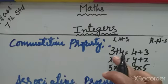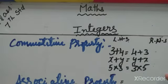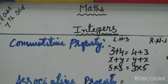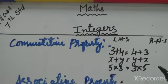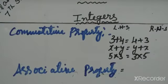3 plus 4 is 7, and if you reverse it, 4 plus 3 is also 7. Similarly, x plus y and y plus x are one and the same. 5 into 3 is 15 and 3 into 5 is also 15. When you reverse the numbers, the answers are one and the same. So commutative property is always in a binomial and it is just reversing the numbers or letters.